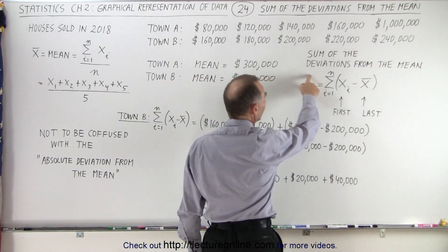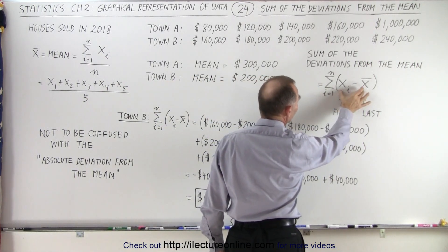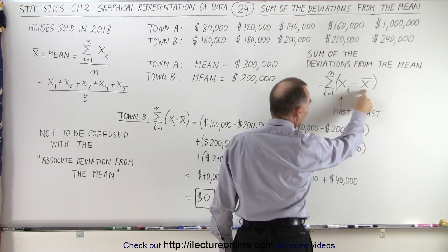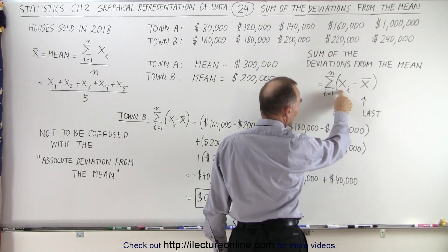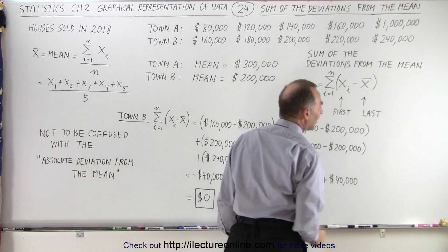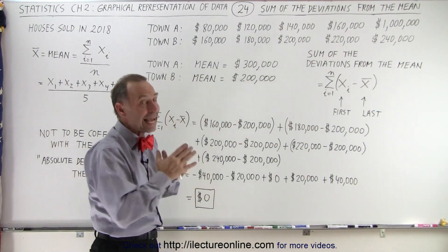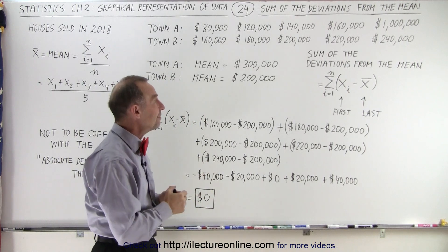So the way we would do that is we simply would sum up the differences between the house prices and the average house price. And of course we put the house prices first and then we put the average last so that if the house price is less than the average we get a negative result, a negative deviation from the mean.